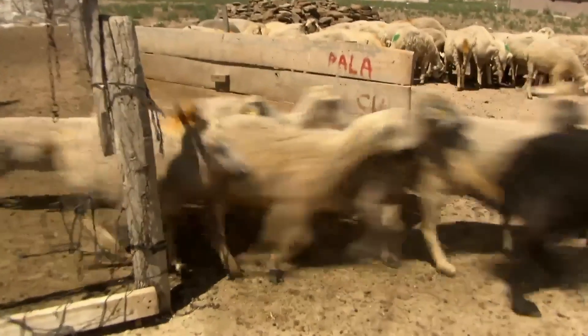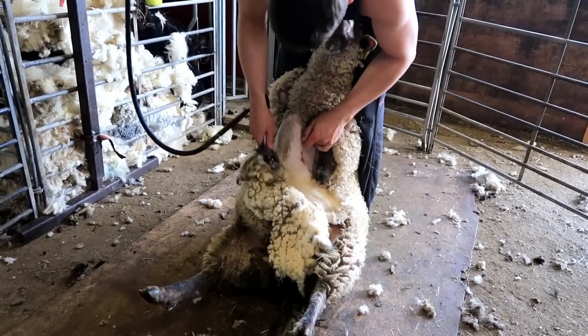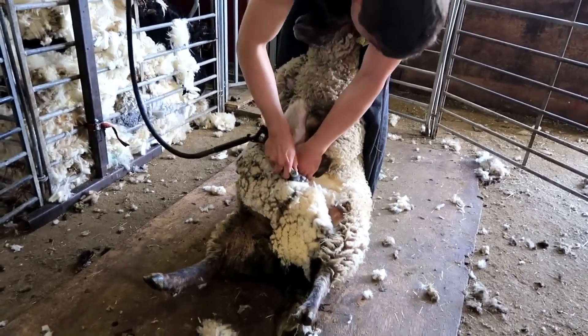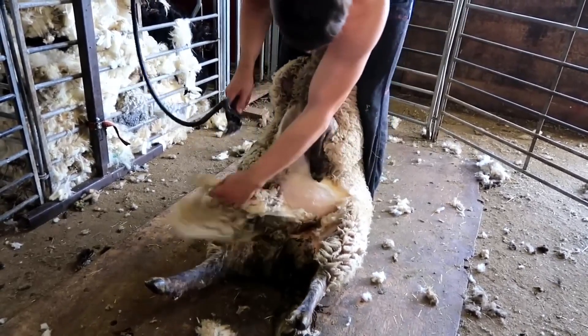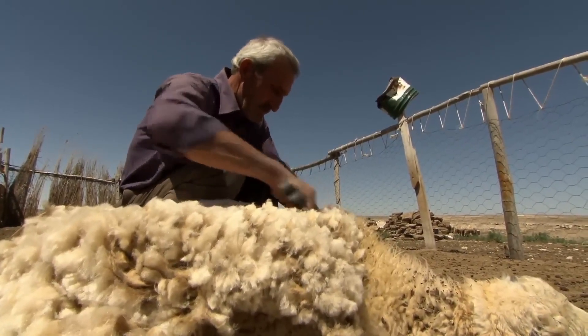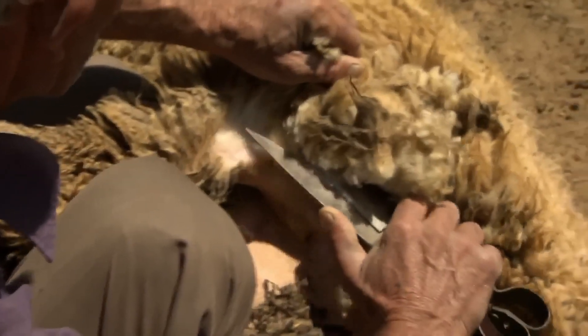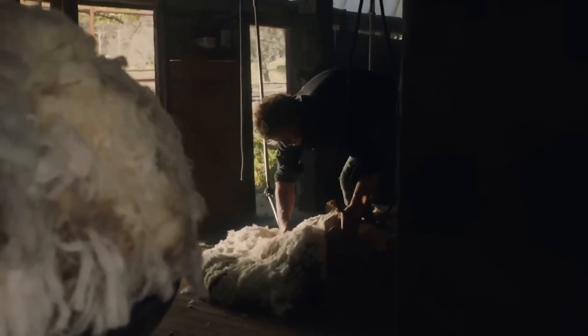Each year, in every corner of the planet, sheep delight us with their production of between 2 and 3 million tons of wool. So, what makes this fiber so special? Its softness and curls make it one of the most popular and widely used materials worldwide.